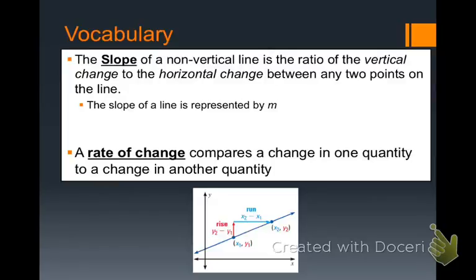This is section 4.4: Find Slope and Rate of Change. The slope of a non-vertical line is the ratio of the vertical change to the horizontal change between any two points on the line.